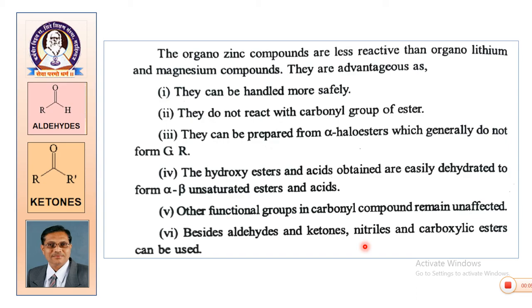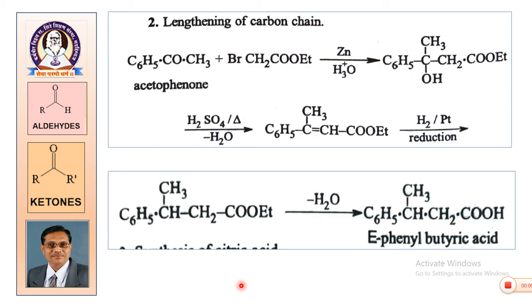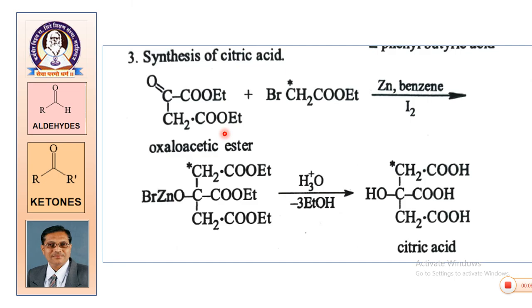These are the various applications. At every stage you get a product that can be further processed to get a modified molecule. Applications include preparation of beta-hydroxy esters, unsaturated esters, and alpha-beta unsaturated esters, as well as lengthening of the carbon chain — the same reaction is used for chain extension. The synthesis of citric acid is also carried out using this reaction.